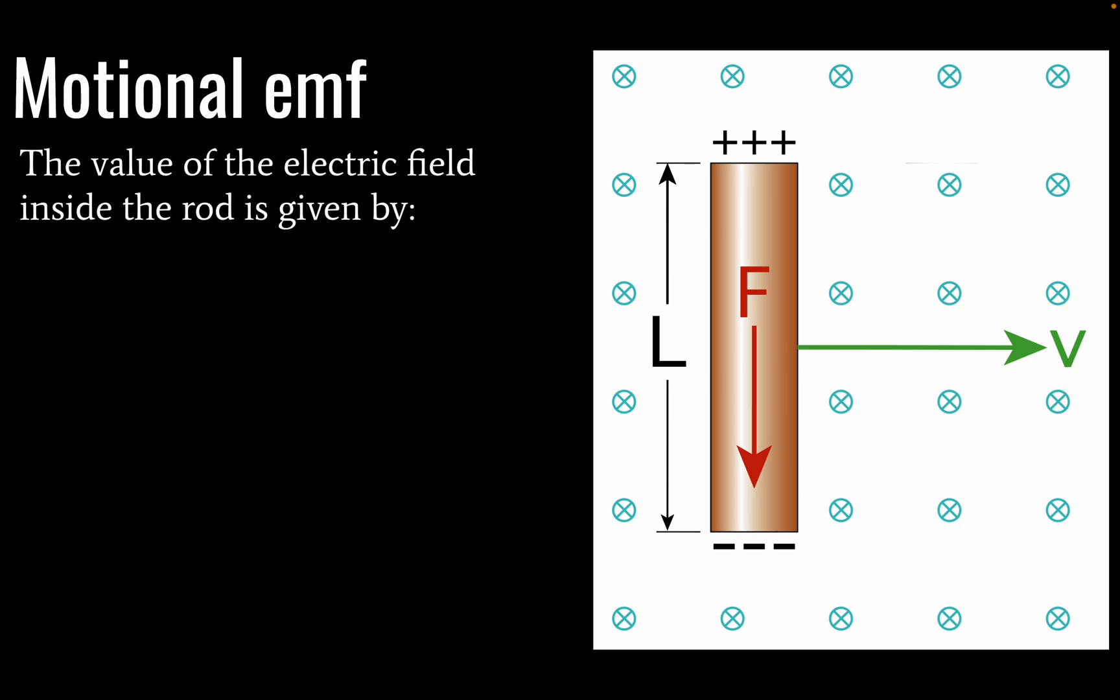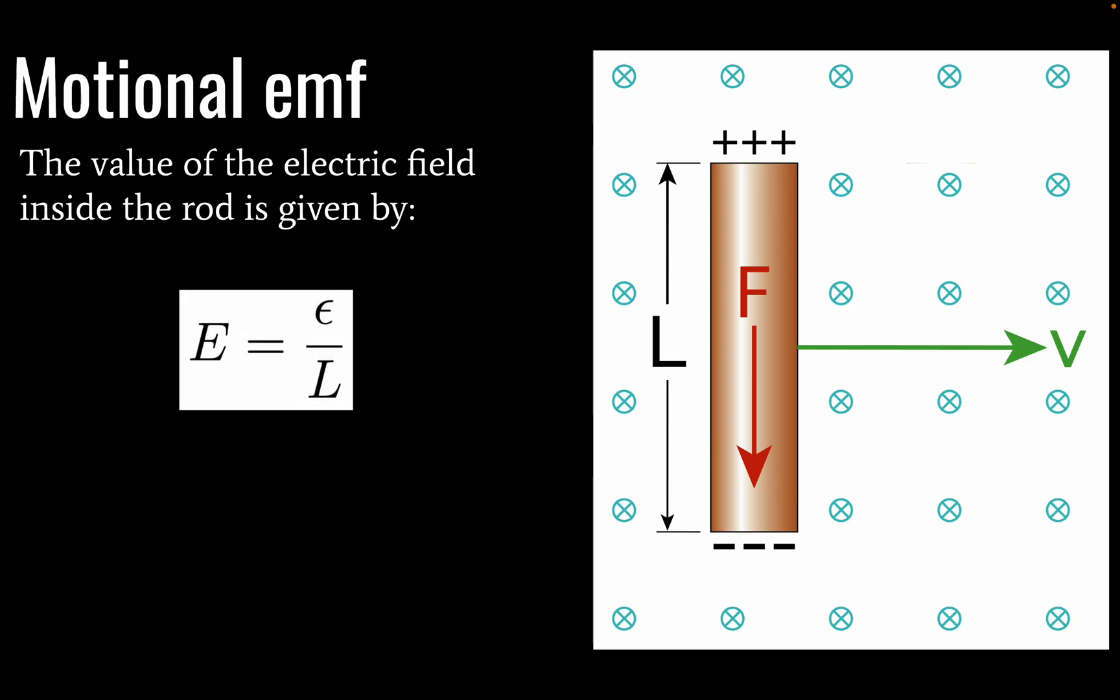The value of the electric field inside this rod is going to be given by E is equal to epsilon divided by L and epsilon is going to be defined as EMF or electromotive force. The unit for EMF is volts. So L is the length of the conductor which is generally going to be a wire but could also be a bar any metal really or could be graphite I suppose there are non metal conductors as well.